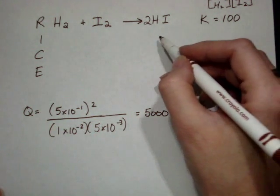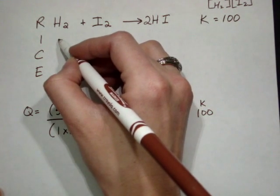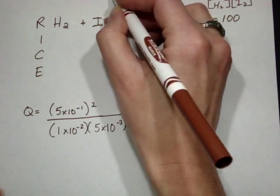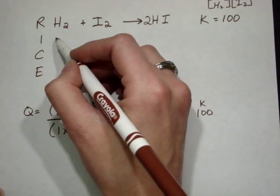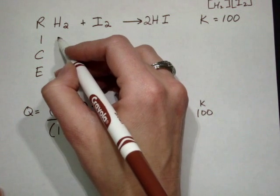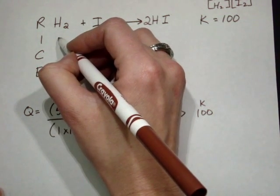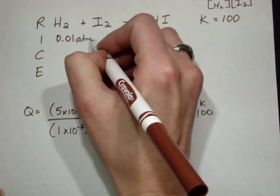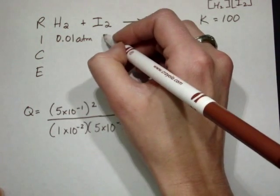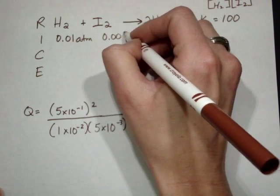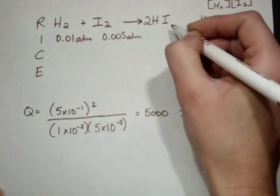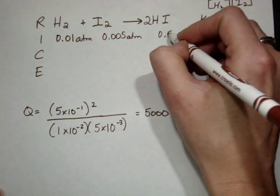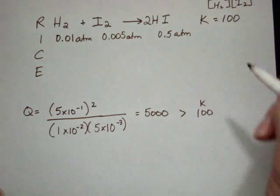We have our initial values. Since we're talking about pressures, we can just use the pressures. We don't have to worry about the flask size because it's all in the same flask. Hydrogen is 1 times 10 to the minus 2, so that's 0.01 atmospheres. Iodine was 0.005 atmospheres, and hydrogen iodide was 0.5 atmospheres.